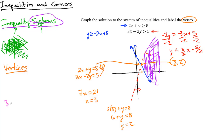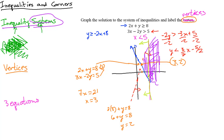Now let's step it up — what if you have a system of three inequalities? Adding x < 5 means instead of just one vertex, you get a bunch of vertices. We graph x = 5 as a vertical line. Since x < 5, we shade to the left. Now all three regions must overlap — that's still a corner at the original vertex, plus new ones.